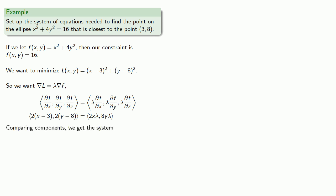And if we compare the components, we get two equations. Additionally, since our point has to be on the ellipse, we have the equation of the ellipse as our third equation, and now we have our system of three equations and three unknowns.